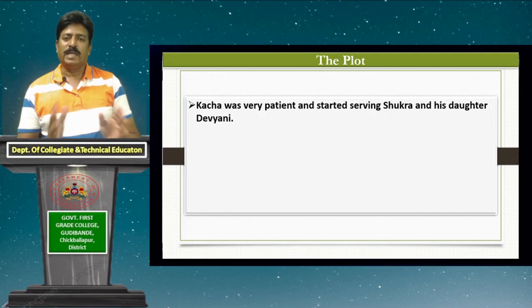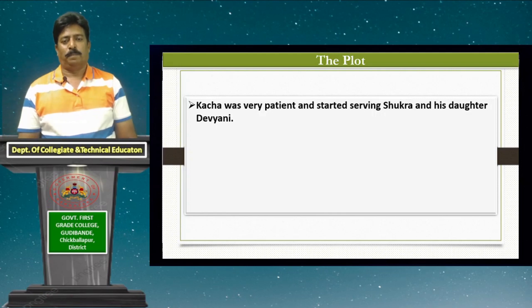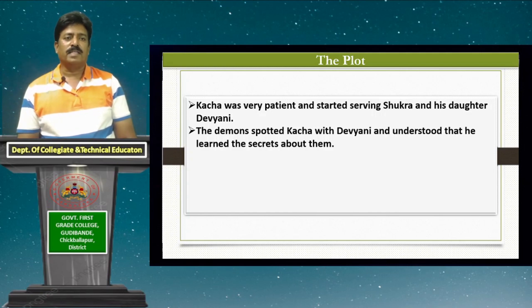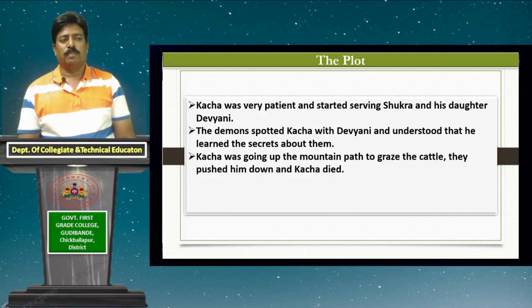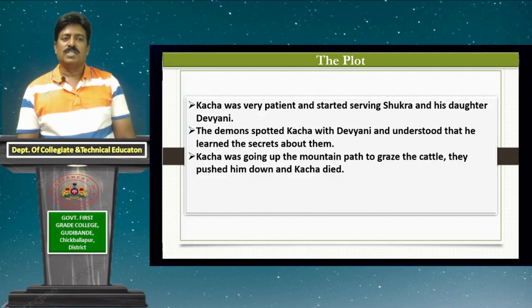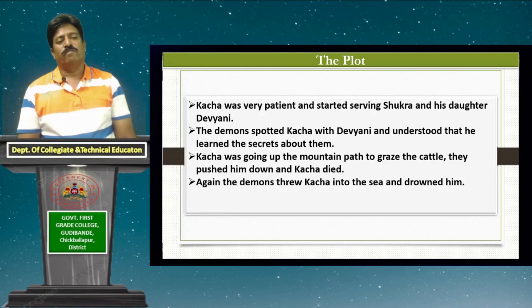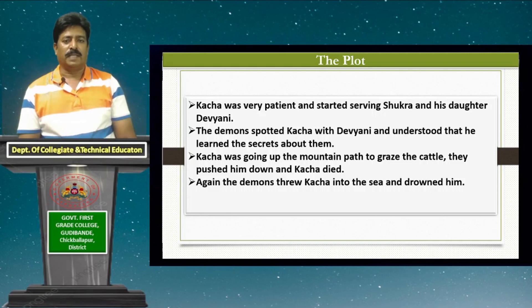Kacha played with Devayani and told her many stories of gods and demons but always kept a distance from her, even though she had expressed her love for him. One day the demons spotted Kacha with Devayani, recognized him as Brahaspati's son, and understood he had been learning their secrets. Unable to accuse their teacher, they killed him. They pushed him down a mountain path while he was grazing cattle. Devayani pleaded with her father Shukracharya to revive Kacha, and Shukra chanted the Sanjivini mantra and brought him back. The next day the demons spotted Kacha alone, threw him into the sea, and drowned him again. Kacha was revived once more due to Devayani's repeated pleadings.